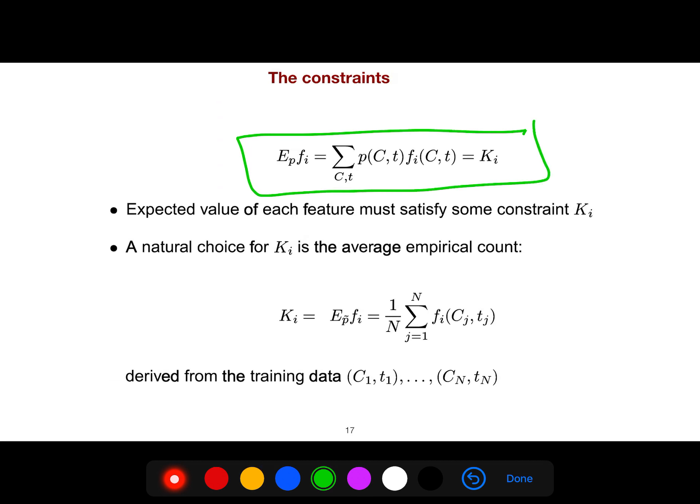So the constraint is this. You can say what is the expectation of your feature? First you say what is the probability of that context times the feature, that feature for the context. Then you say what is the probability of another context times the feature of that context. So you can calculate the expectation of feature, feature i. So if you calculate, if you say that the natural choice for K_i could be the average empirical count, you can calculate it very easily because it's an empirical thing as we do in all statistics. We have only data, so we don't have parallel distribution, so we add them because for N observations you can just add them and take the average.